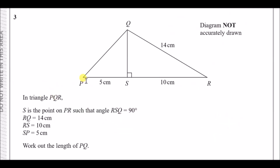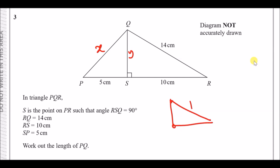Number three: in triangle PQR, S is a point on PR such that angle RSQ is a right angle — 90 degrees. We're given RQ equals 14, RS equals 10, and SP equals 5. We need to work out the length PQ. Looking carefully, we have two right-angle triangles, so we can just use Pythagoras's theorem on the first right-angle triangle to find the unknown length, then use it again on the second triangle.